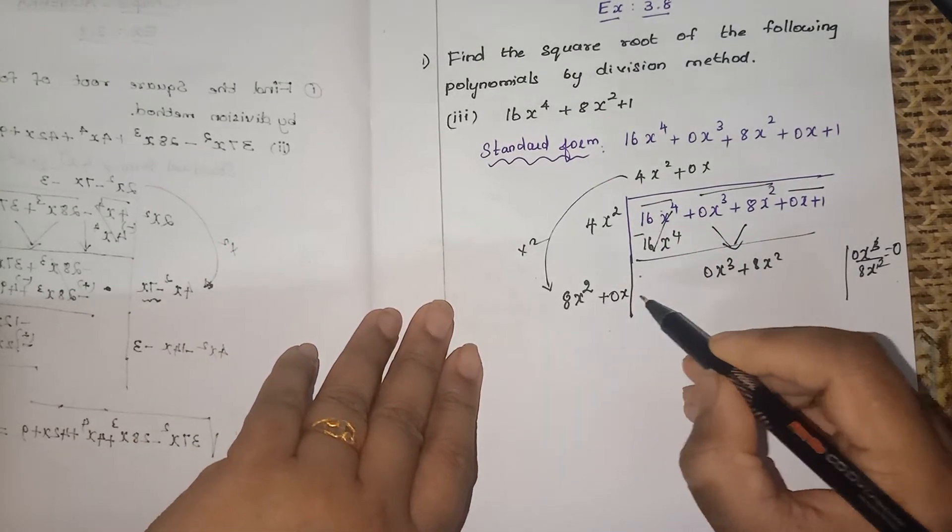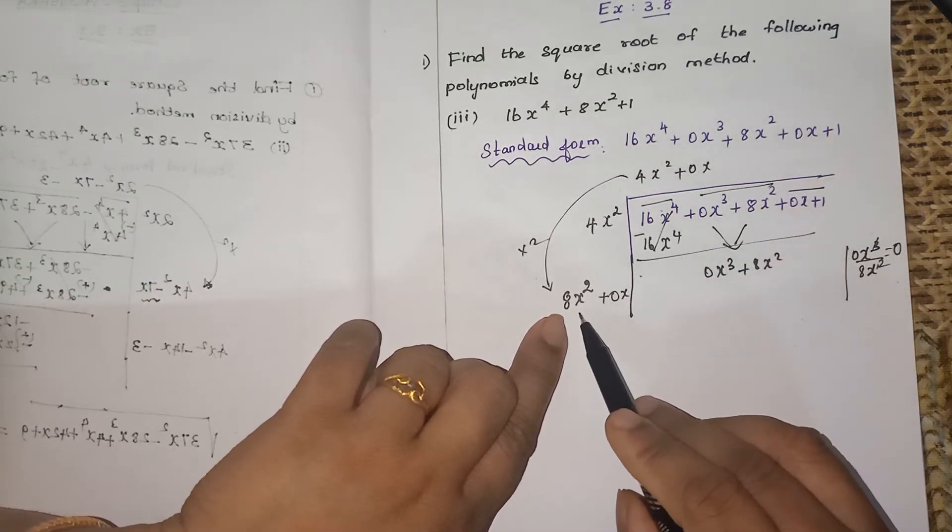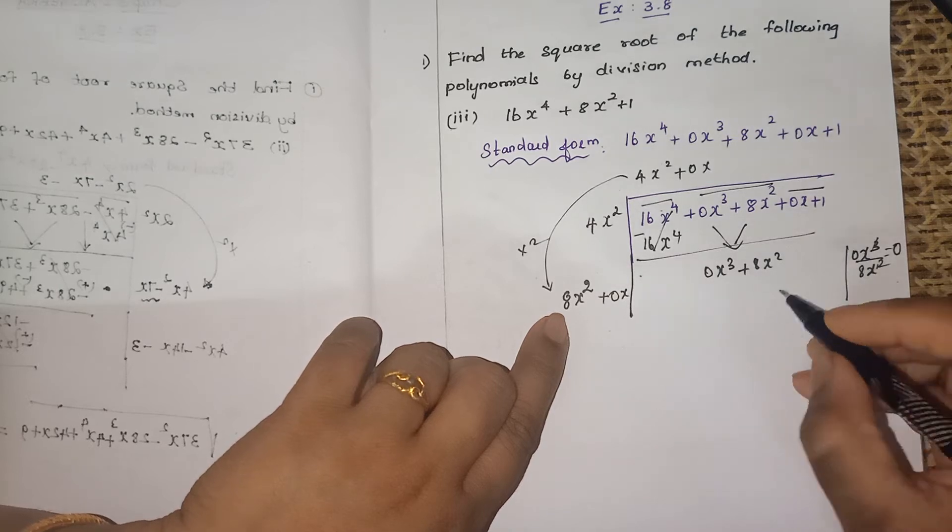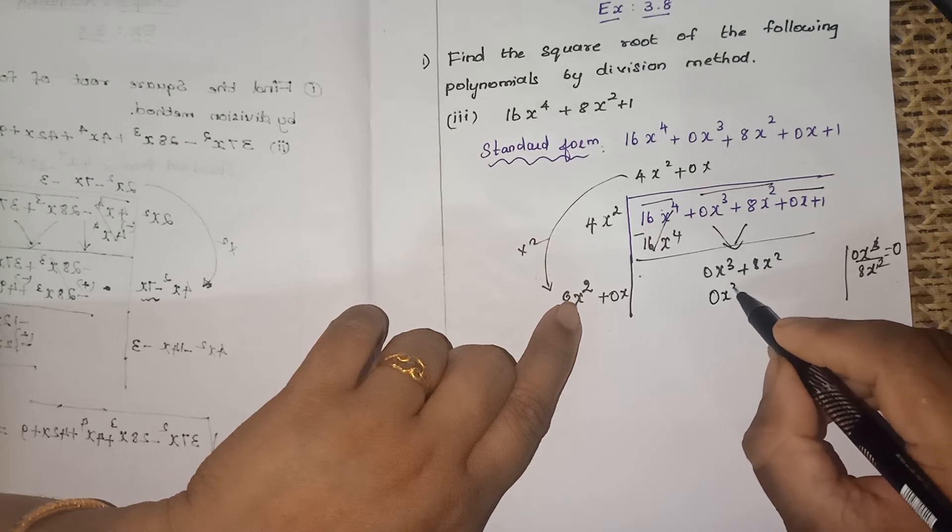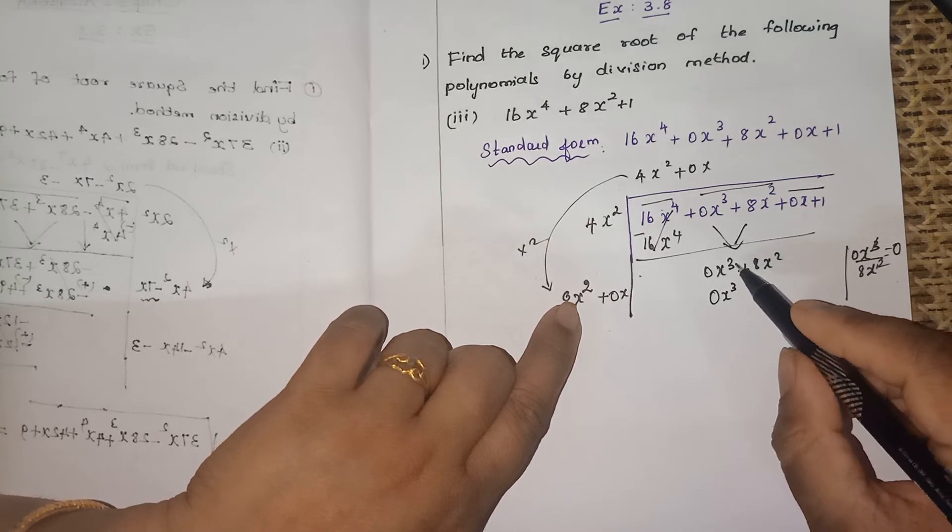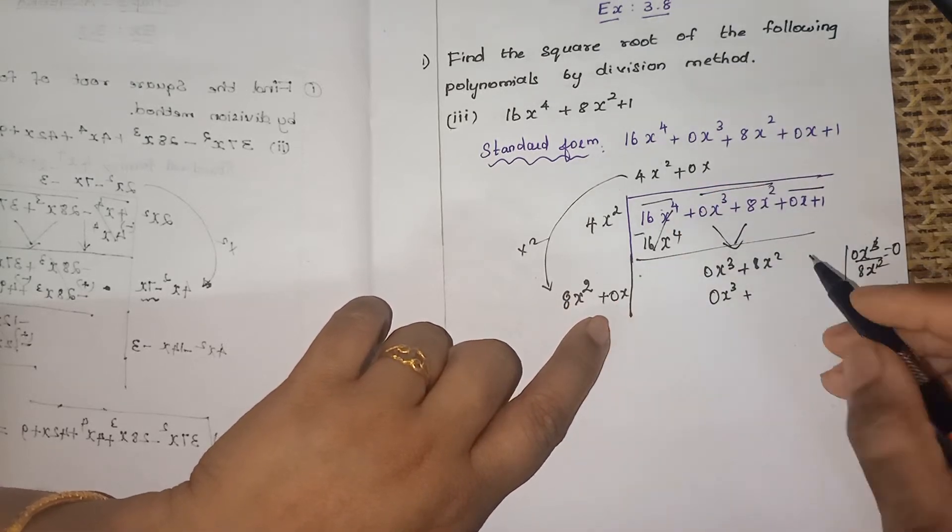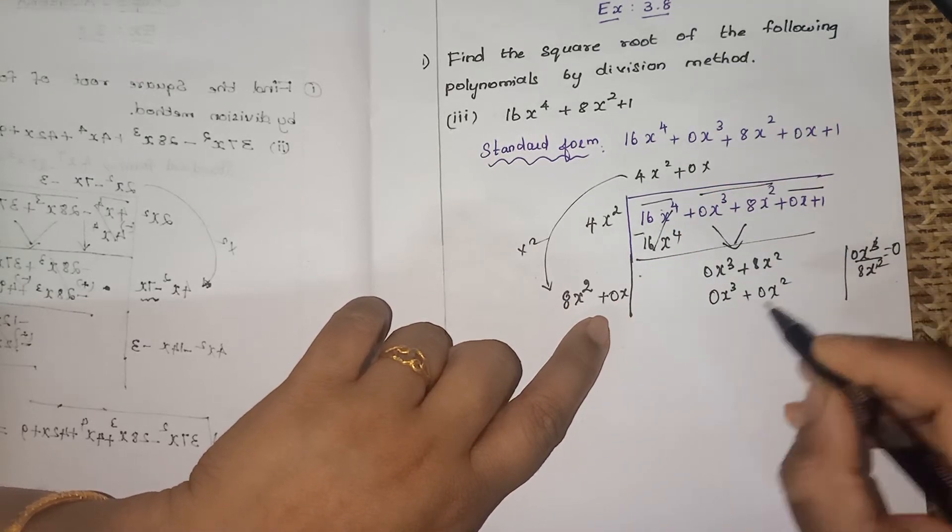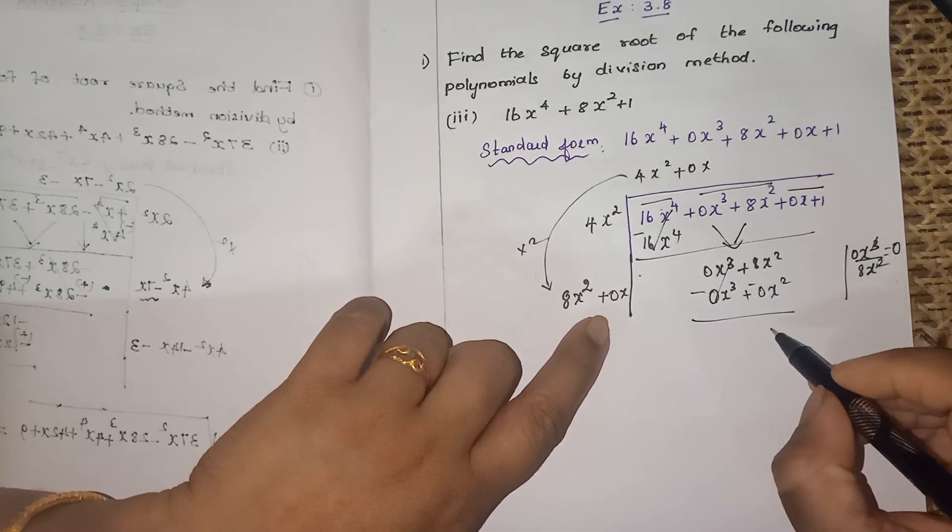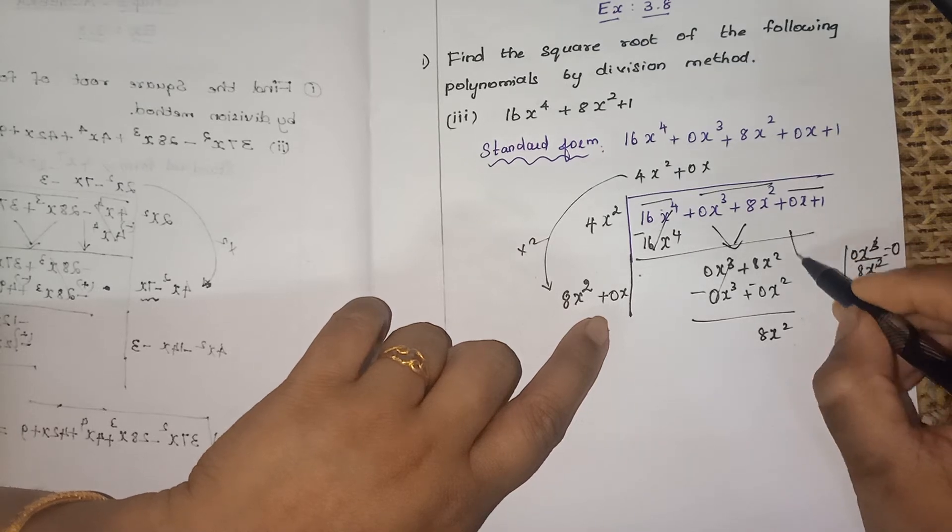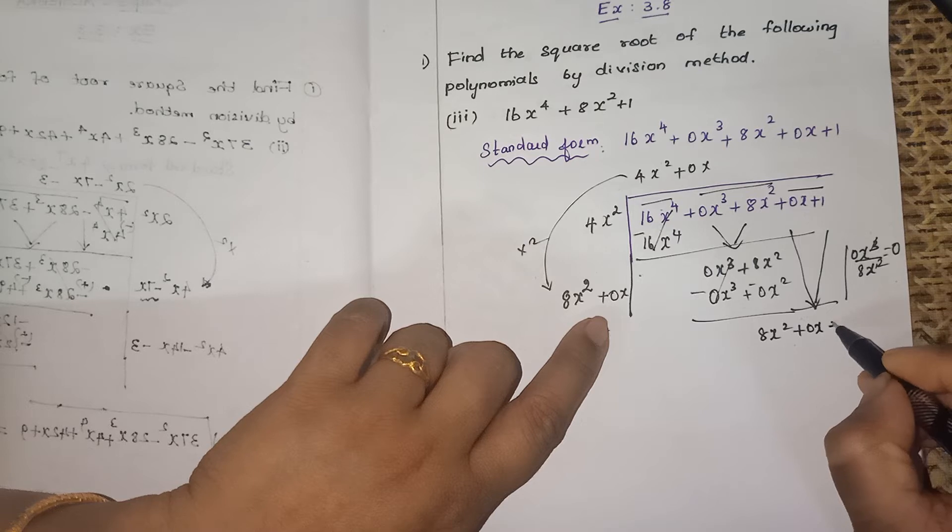Next, this 0 you have to multiply into both the terms. So 0x into 8x square is again 0, giving 0x cube. Next, 0 into 0 is 0, so 0x square. When you subtract it, this will get cancelled, so you will get 8x square minus 0x square equals 8x square. You have to drop down these 2 terms: plus 0x plus 1.